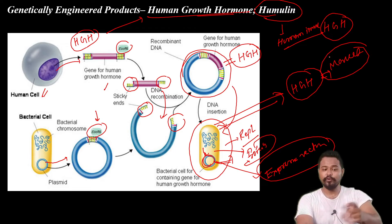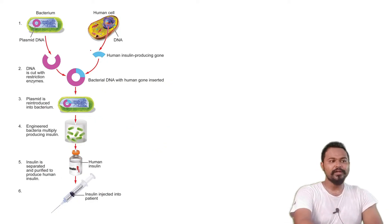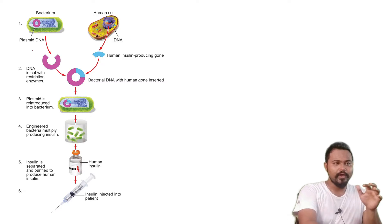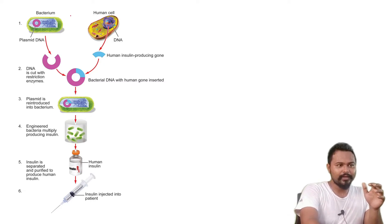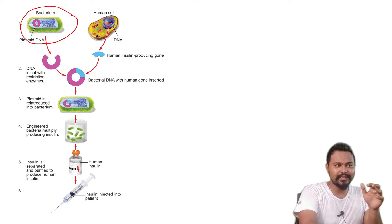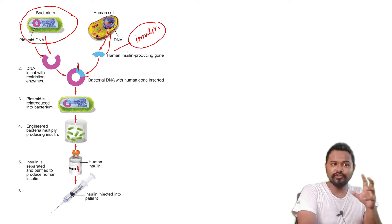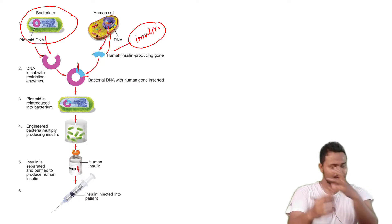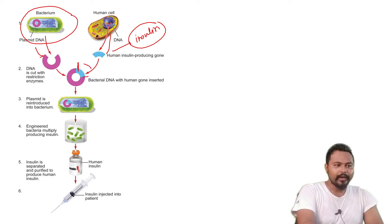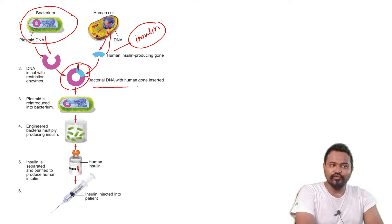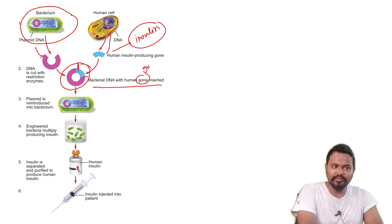This is about human growth hormone. Human insulin — Humulin — works the same way. You take bacteria, use the plasmid, insert the human insulin gene using EcoR1, then combine them to form recombinant DNA — bacterial DNA with the human gene inserted.